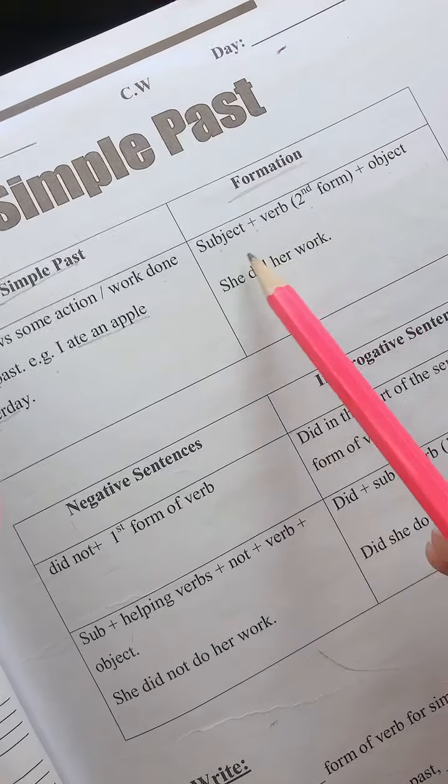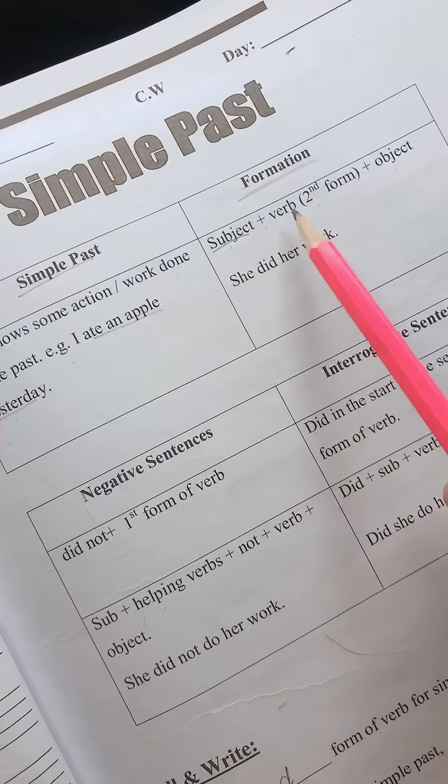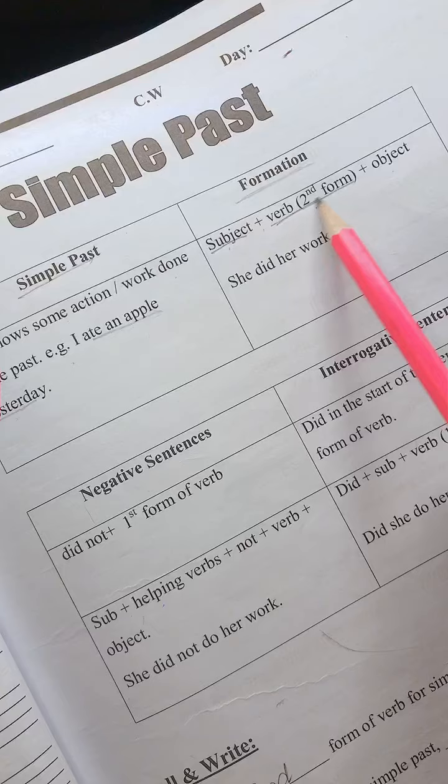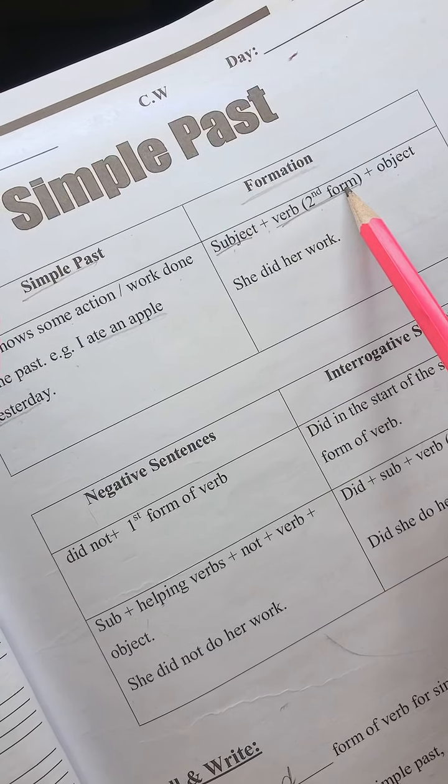There are three things in which you need: subject, verb, second form. You have to use the verb's second form.